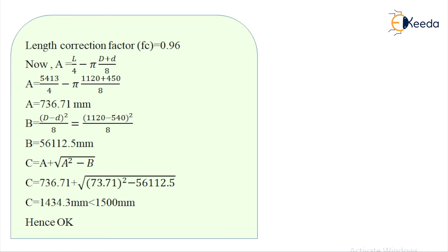Taking standard belt length L = 5413 mm with length correction factor FC = 0.96. Recalculating: A = L/4 − π(D + d)/8 = 736.71 mm. B = (D − d)²/8 = 56112.5 mm. C = A + √(A² − B) = 736.71 + √(736.71² − 56112.5) = 1434.3 mm, which is less than 1500 mm. So this is the correct solution.